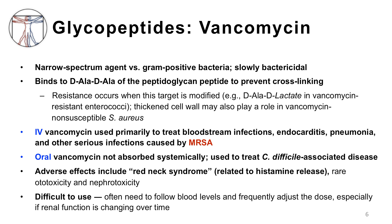Let's start with vancomycin, the representative example of the glycopeptide class. Vancomycin is a narrow-spectrum agent versus gram-positive bacteria. It is slowly bactericidal relative to the beta-lactams and the lipopeptides, which are rapidly bactericidal. Vancomycin binds to D-alanine-D-alanine of the peptidoglycan peptide to prevent cross-linking of the peptidoglycan chains. Resistance occurs when this target is modified — for example, changed to D-ala-D-lactate in vancomycin-resistant enterococci. Another resistance mechanism is a thickened cell wall, which may play a role in resistance in vancomycin-nonsusceptible Staphylococcus aureus.